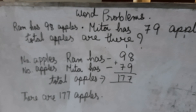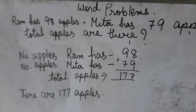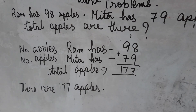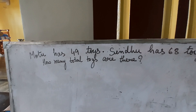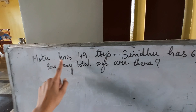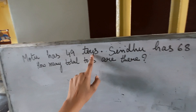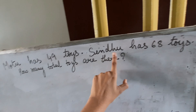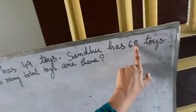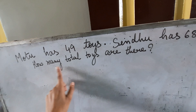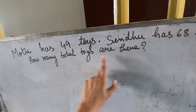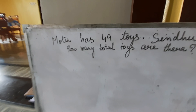Easy or not easy, children? Easy. Very good. One more question I have given on the board. Motu has 49 toys. Sindhu has 68 toys. How many total toys are there?